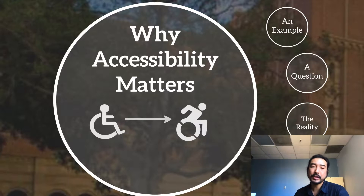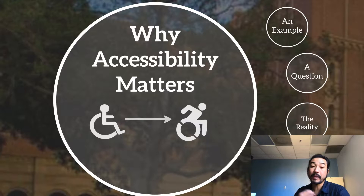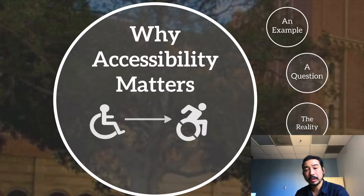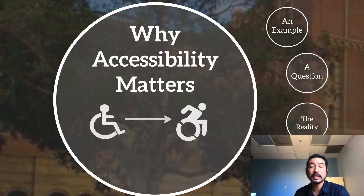Here on this screen we see the symbol for disability, transitioning to a more dynamic symbol — reflecting that wheelchair use and mobility issues are a spectrum disorder, and we're looking at accessibility as a spectrum as well.